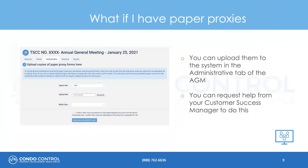What if I have paper proxies? You can upload paper proxies to CondoControl through the Administrative tab of the AGM. If you need assistance with this, you can reach out to your Customer Success Manager.